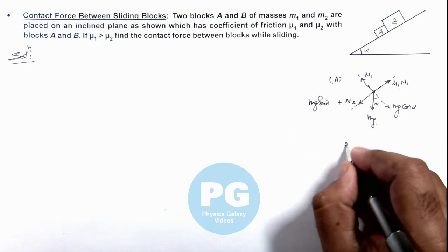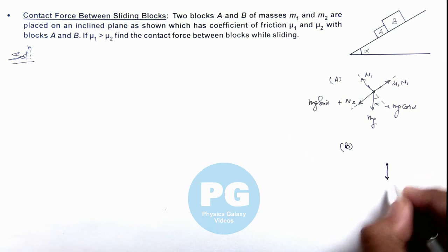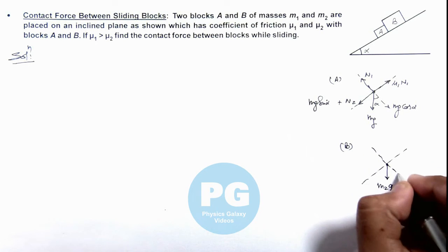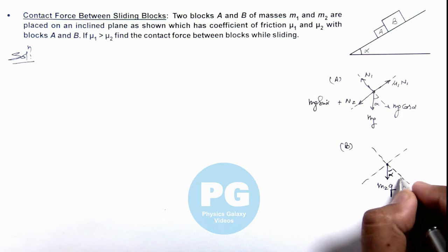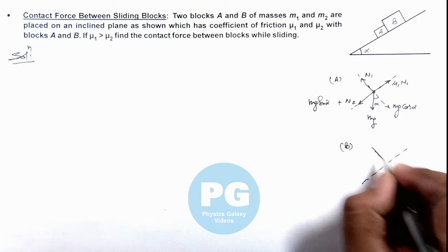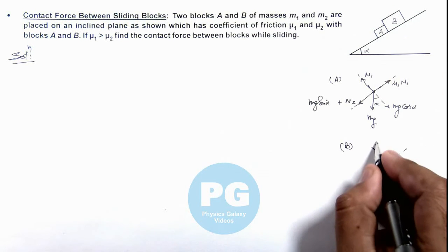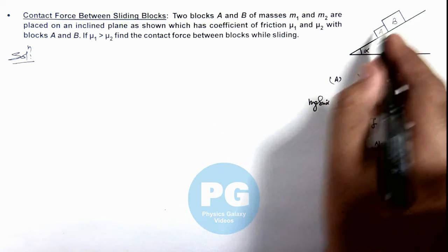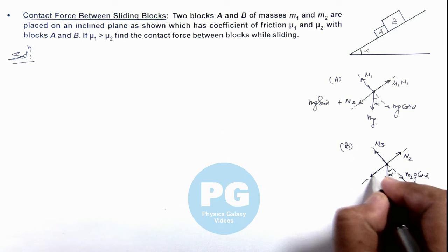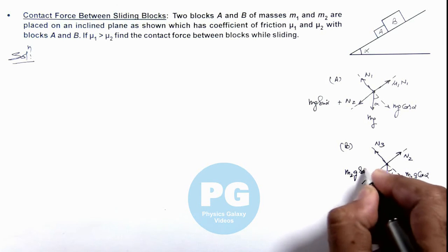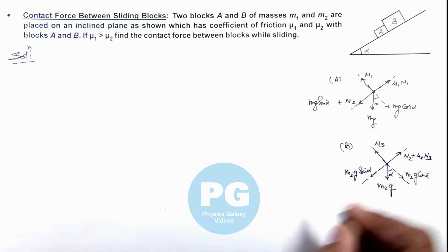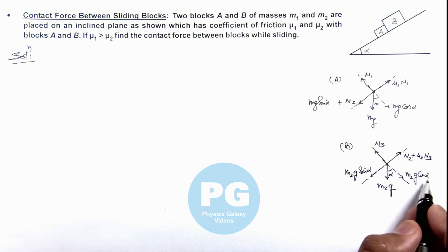Similarly, drawing the free body diagram of block B, it experiences its weight m2g in the downward direction. With angle alpha, the component of weights are m2g cos(alpha) and m2g sin(alpha). A normal reaction N3 acts from the inclined surface, and N2 from block A acts in the opposite direction. Block B also experiences friction mu2 times N3, where N3 equals m2g cos(alpha).